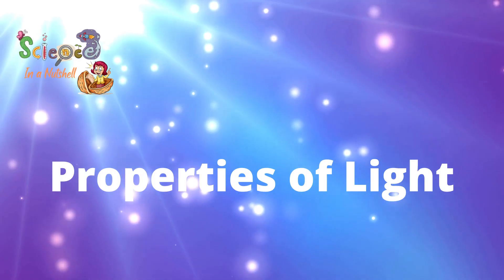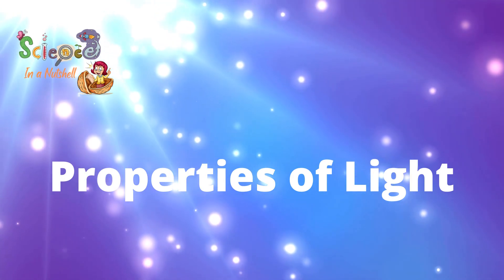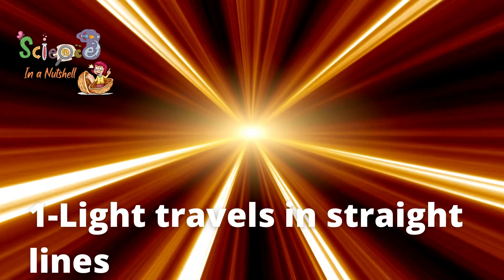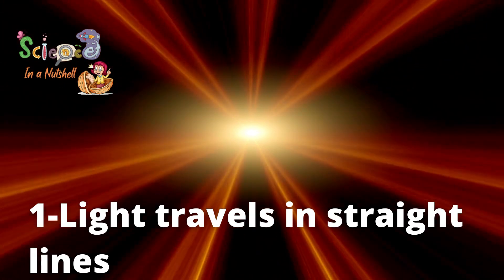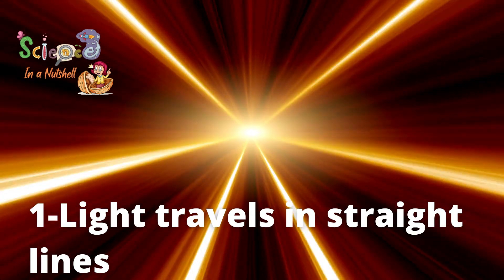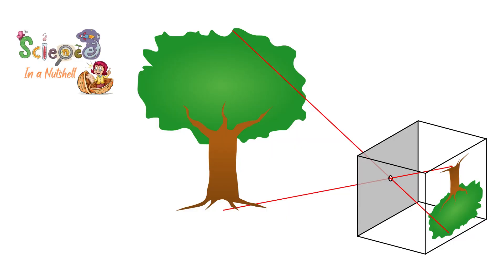Now, we need to know what are the properties of light. The first property of light is that light travels in straight lines — not zigzag lines and not curved lines, just straight lines. The formation of images through a pinhole camera is because the light travels in straight lines, so the image which is formed is minimized and inverted, just as you can see here.